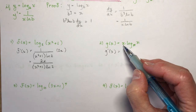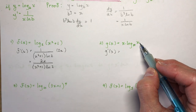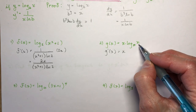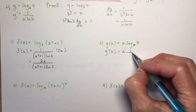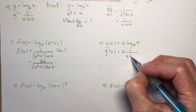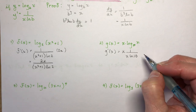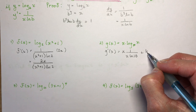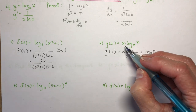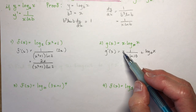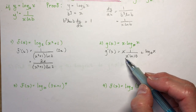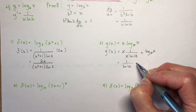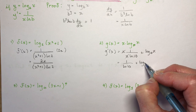For g prime of x, we have x times log base 10 of x — so we have the product rule to deal with. First times the derivative of log base 10 of x, which is 1 over x·ln 10, plus the second, log base 10 of x, times the derivative of x which is 1. The x's cancel, giving 1 over ln 10 plus log base 10 of x.